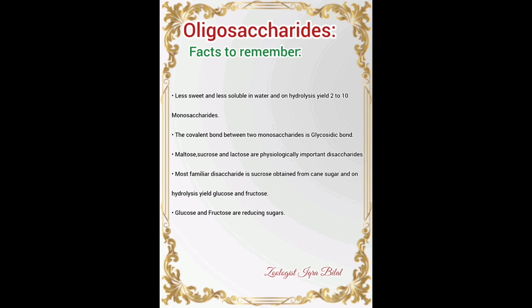Examples of physiologically important disaccharides are maltose, sucrose, and lactose. The most common disaccharide is sucrose, obtained from sugar cane, and on hydrolysis it yields glucose and fructose. Glucose and fructose molecules are reducing sugars, meaning they can reduce other substances by adding electrons to them. This fact has already been asked in papers.